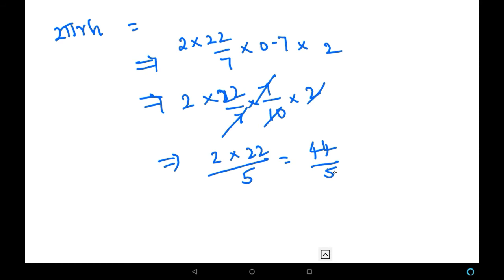So we have got the curved surface area of this cylinder. The roller area we have found. Now what we have to do is find the area covered in 10 revolutions. So one revolution it takes 44 by 5. For 10 revolutions, how much will it take? We have to multiply it with 10.